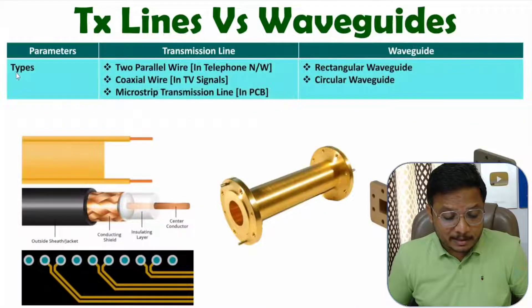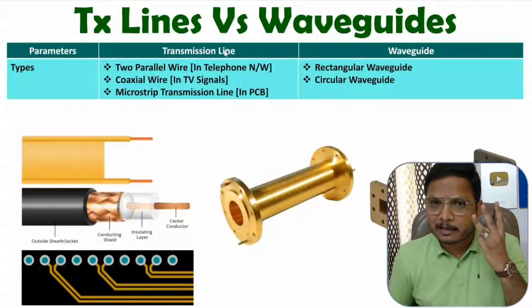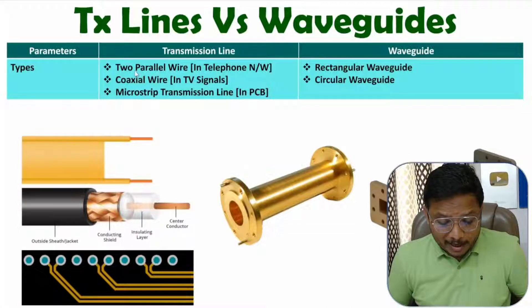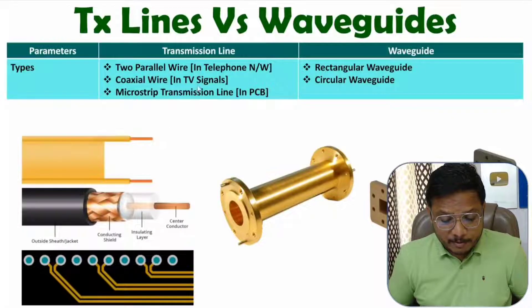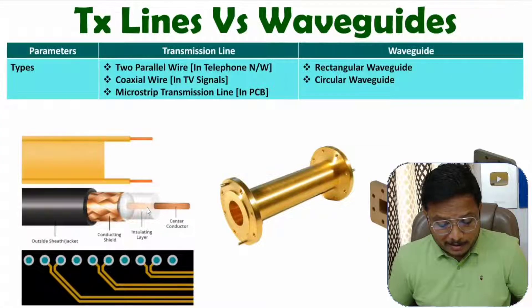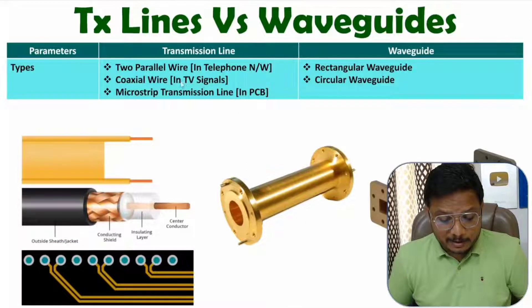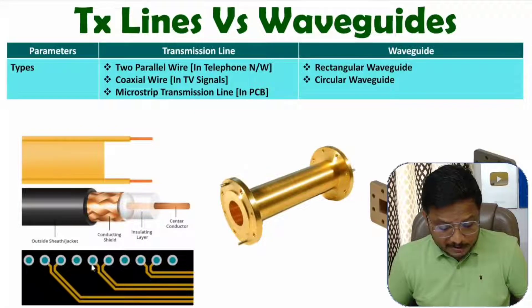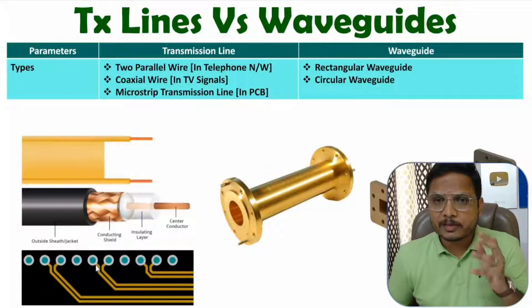The first parameter is different types. With transmission lines there are three categories: first is two parallel wire, which was used in telephone networks; second is coaxial cable, which has an inner center conductor and an outer conductor separated by insulating material, used in TV signals; and third is microstrip transmission line, which is fabricated on a PCB — a printed circuit board.